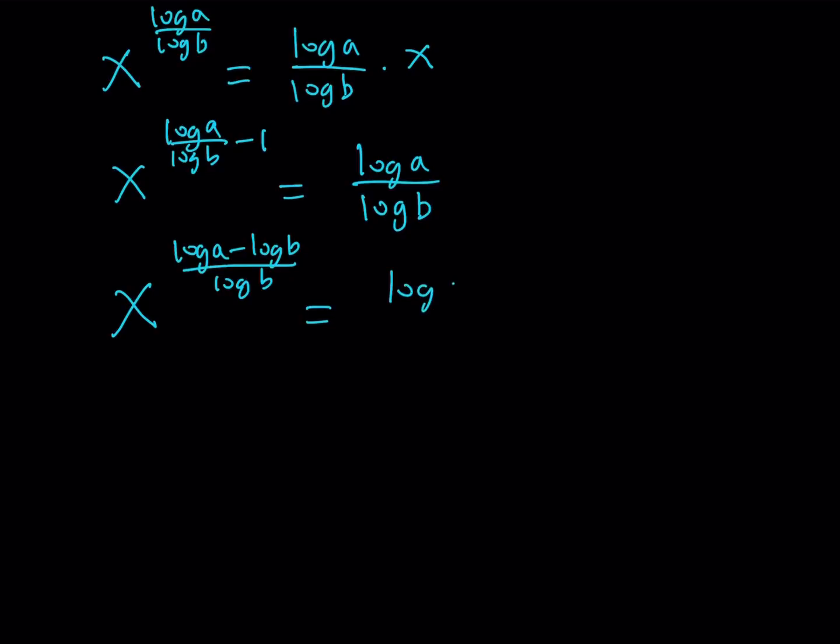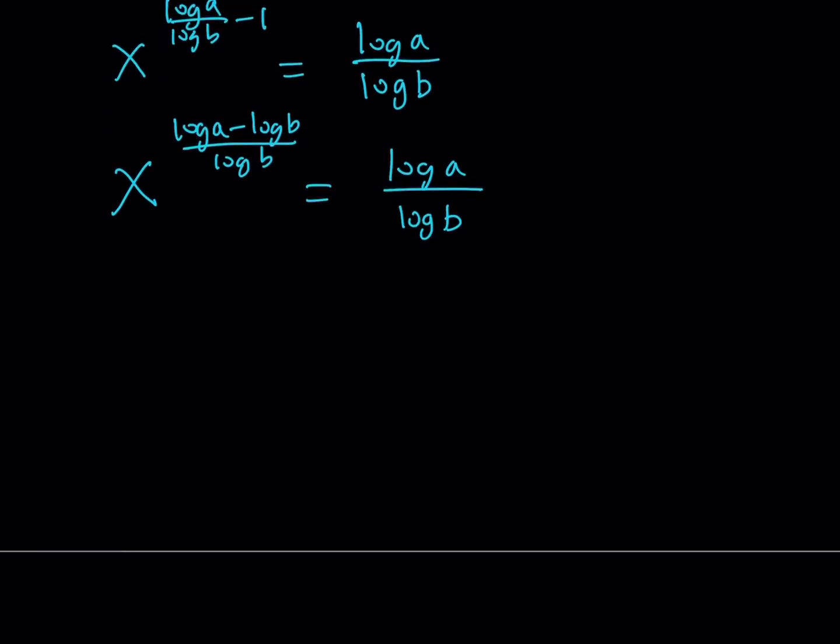So, let's go ahead and simplify this exponent a little bit. Make a common denominator like this. And now, we're going to raise both sides to a power so that we can get rid of the exponent here and isolate x. So, we want x to the power 1.